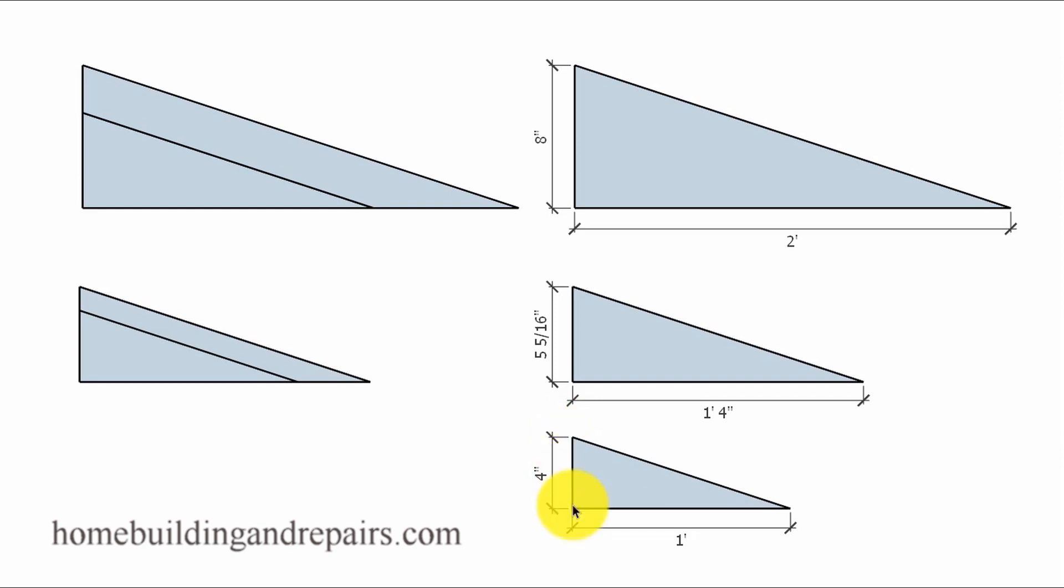If this was a 6 and 12 roof pitch, this measurement would be 6 inches—it would go up 6 inches for every 12 inches. And this is usually a number that you're going to have; it's going to be referenced on the building plans and we're going to use this to figure out the proportion.